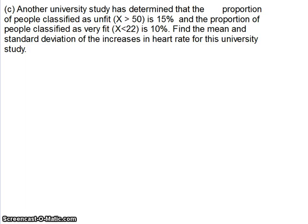This is an interesting question and this is really what we're leading towards. Another university study, so a completely different study now, has determined that the proportion of people classified as unfit, X greater than 50, is 15%, and the proportion classified as very fit, X less than 22, is 10%. Find the mean and standard deviation for this university study. We haven't got the mean, we haven't got the standard deviation. All we have are the proportions and we've got to try and work backwards and figure it out.